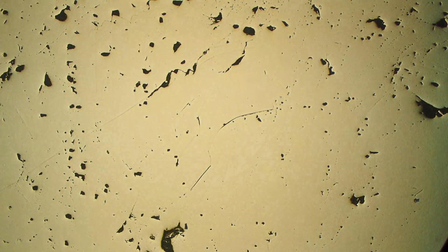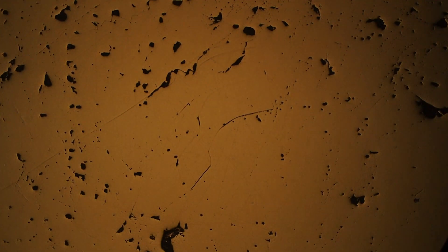If we switch into crossed polars and rotate the stage, we're not seeing very much anisotropy. Sometimes this can be quite distinct and it'll go from gray-blue to yellow-green, but not with our samples.